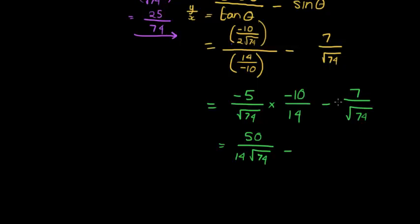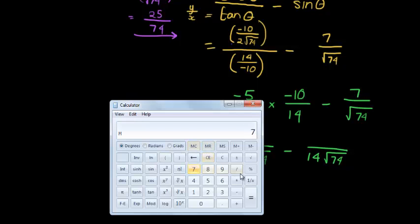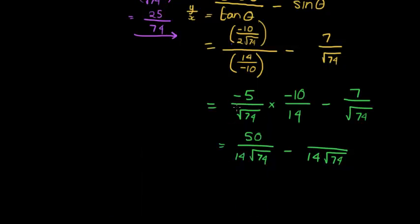Now I would like to add these two fractions, which means I need common denominators. So I need to multiply this one with 14 to have the same denominator, and then the top 7 must also be multiplied with 14. What do we get? 7 times 14 is 98.